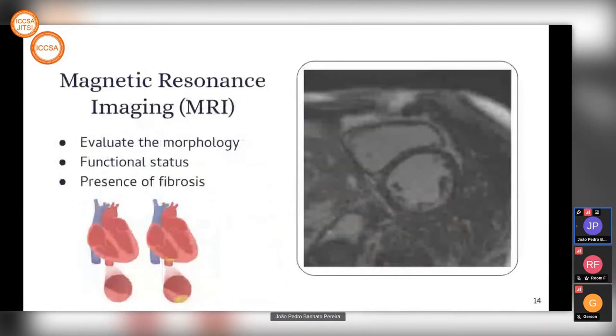We did the MRI on the patient to evaluate the morphology and functional status of the heart. It showed presence of fibrosis. This fibrosis is associated with changes in the heart conduction system and possibly arrhythmias. The pattern shown in the patient's fibrosis is the same in non-ischemic heart disease.